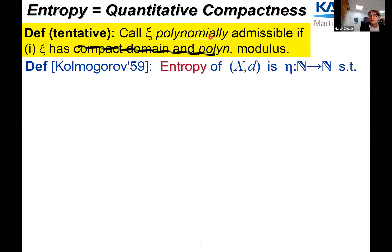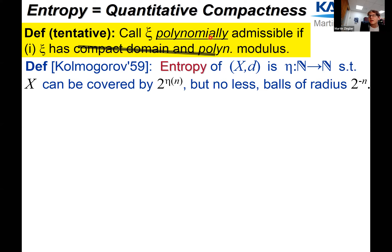Entropy is a quantitative strengthening of total boundedness — basically a modulus of total boundedness, a Skolemization of the qualitative property of total boundedness, just like a modulus of continuity is a Skolemization of qualitative uniform continuity. By total boundedness, a compact space can be covered by finitely many closed balls of radius two to the minus n. Entropy basically counts the minimum number of such balls needed — the optimal number. We count only in integer powers of two, similar to how a modulus of continuity considers integer powers of two.